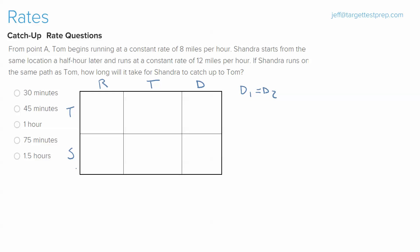So let's read through the question so we know where to begin. It says from point A, Tom begins running at a constant rate of 8 miles per hour. Sandra starts running from the same location a half an hour later and runs at a constant rate of 12 miles per hour. If Sandra runs on the same path as Tom, how long will it take for Sandra to catch up with Tom?